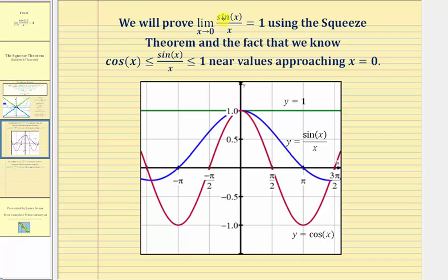Now we'll prove that the limit as x approaches zero of sine x divided by x equals one using the squeeze theorem, and the fact that sine x divided by x — graphed here in blue — is greater than or equal to cosine x, graphed here in red, and less than or equal to one, graphed here in green, near values approaching x equals zero.